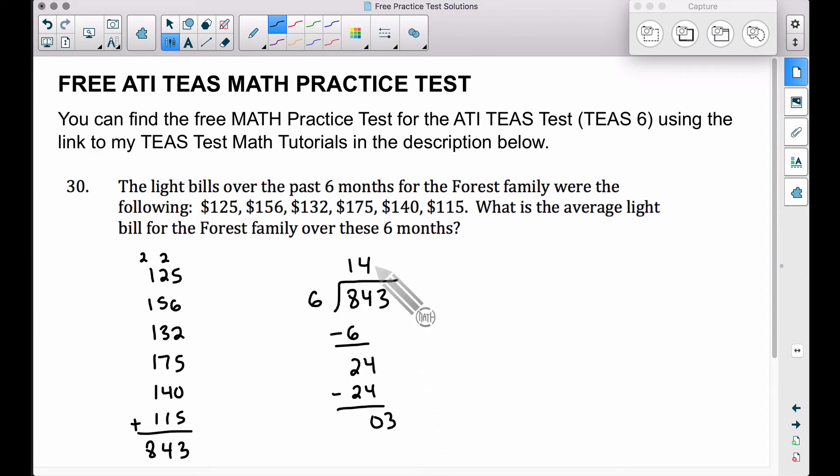Six goes into three zero times. That's why I wanted to review long division here because now we need to tack on a decimal. Let's add on point zero, 843 point zero, which makes this become 30.